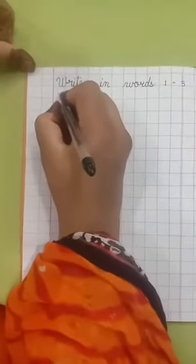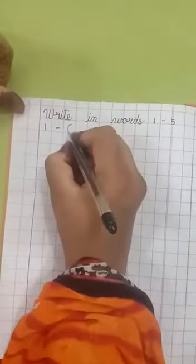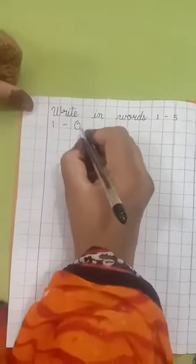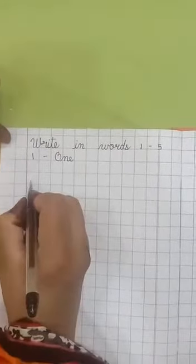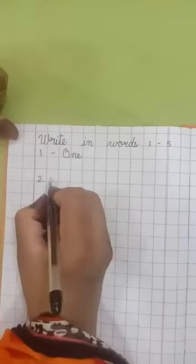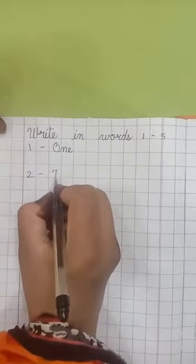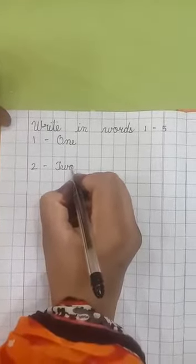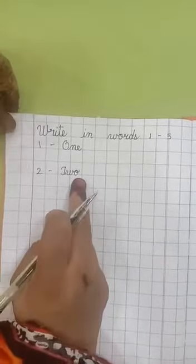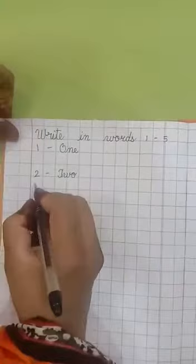We are doing only 1 to 5 spelling today. Okay? Then first you write here: Number 1, small dash. Capital O N E. Spelling of 1: O N E. Then put one dot. And write here: 2 number, small dash. Capital T W O. Spelling of 2.